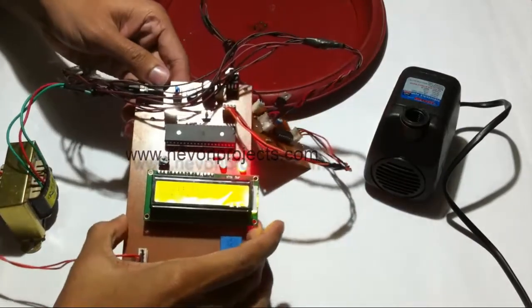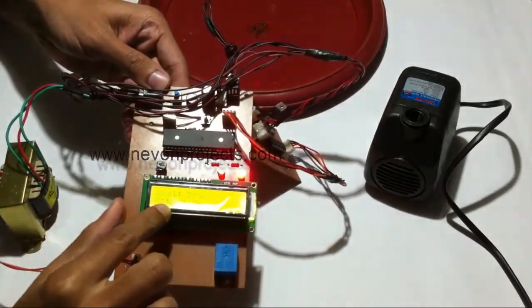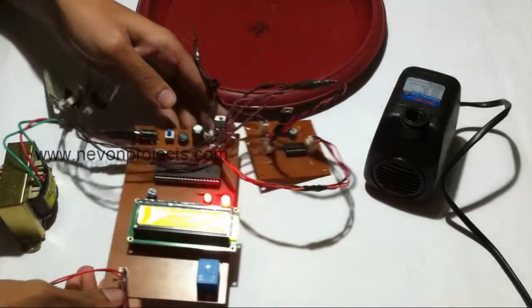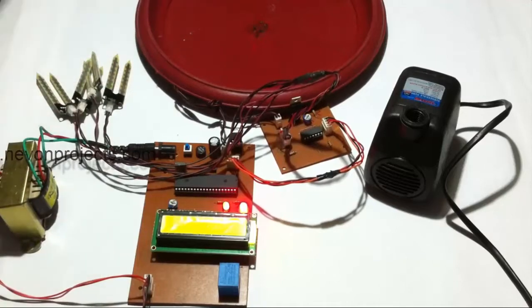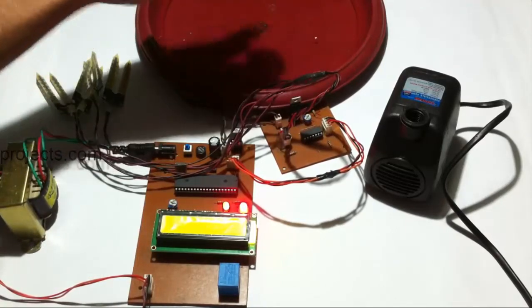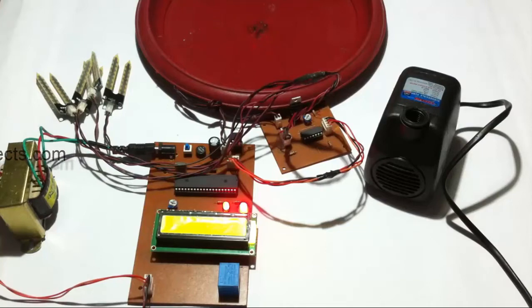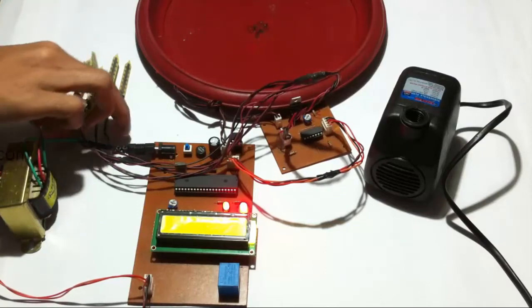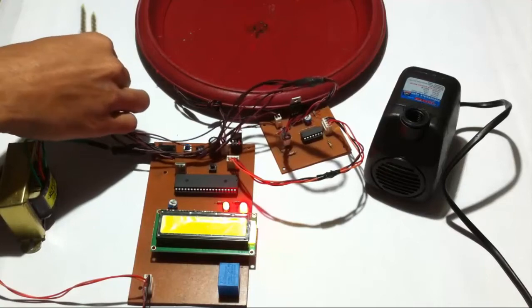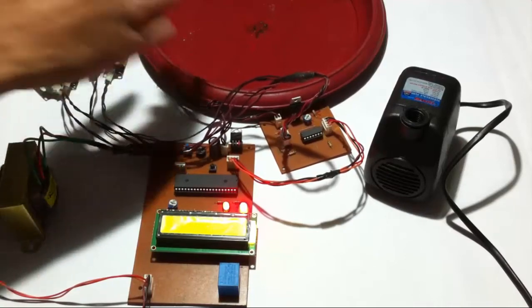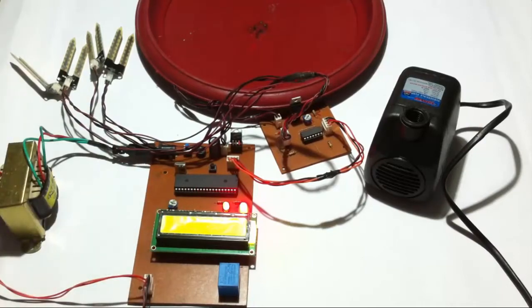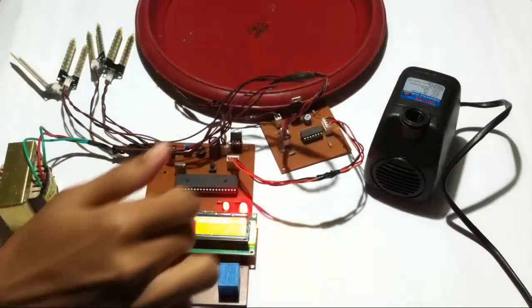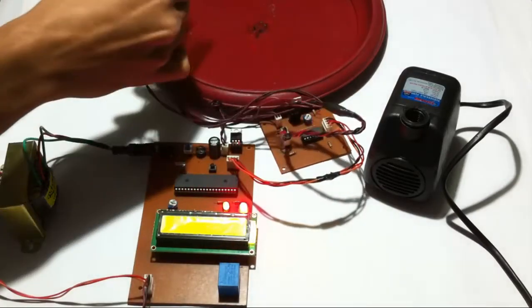Now we have a plate filled with water. Let's insert these sensors in water. As soon as I insert the sensor, it should sense that the moisture content is good inside and it should stop the motor and also display it here. Let's see what happens.